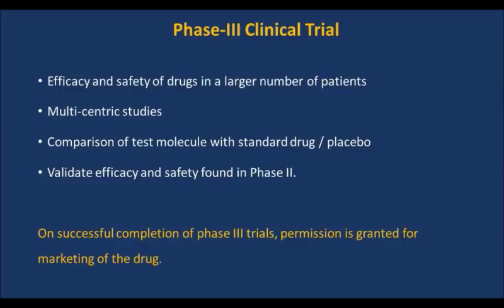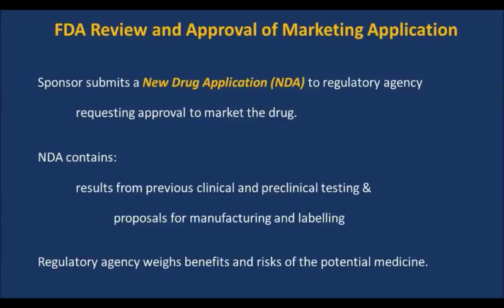On successful completion of phase 3 trials, permission is granted for marketing of the drug. If phase 3 clinical trials reveal that the compound is both safe and effective, the sponsoring company submits a new drug application to the FDA requesting approval to market the drug. These applications contain the results and data analysis from the entire clinical development program as well as from the earlier preclinical testing and proposals for manufacturing and labeling of the new medicine. Scientists, physicians and statisticians at the regulatory agencies review all the data and, after weighing the benefits and risks, decide whether to grant approval or not.